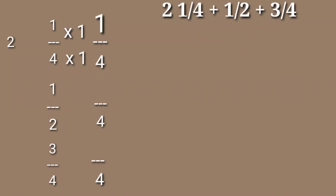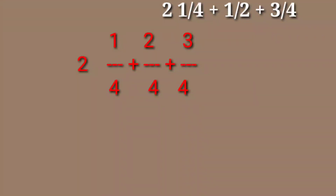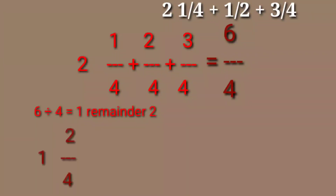For 1/2, multiply 2 by 2 to get 4, so do the same with the numerator — giving 2/4. For 3/4, multiply by 1, so copy 3/4. Now add 1/4 plus 2/4 plus 3/4, setting aside the 2 — the answer is 6/4. Since it's an improper fraction, 6 divided by 4 equals 1 remainder 2, which is 1 and 2/4. Adding the whole number 2, the answer is 3 and 2/4, which simplifies to 3 and 1/2 teaspoons of vanilla.